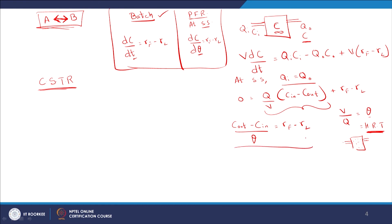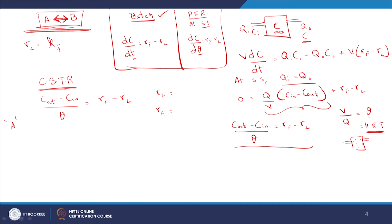Rearranging, we get: (C-out minus C-in) divided by theta equals rate of formation minus rate of loss. Now applying the mass balance on compound A for the reversible reaction A⇌B, we define the rate of loss of A as K-forward times concentration of A, and the rate of formation of A as K-backward times concentration of B — because A is lost when A goes to B, and A is formed when B goes to A.